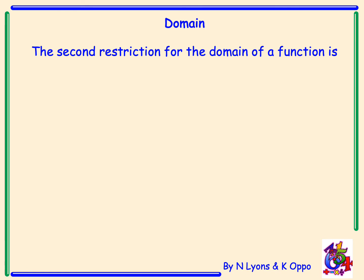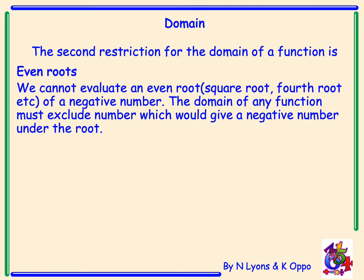The second restriction for the domain of a function is even roots. We cannot evaluate an even root, a square root or fourth root, of a negative number. You know from national 5 that you cannot take the square root of a negative number. The domain of any function must exclude numbers which would give a negative number under the root.